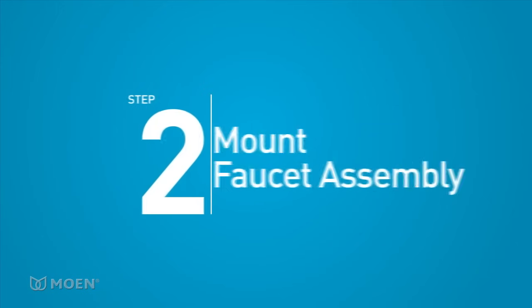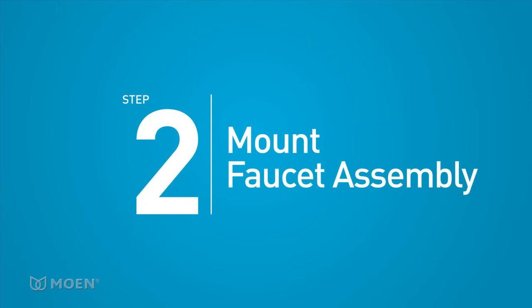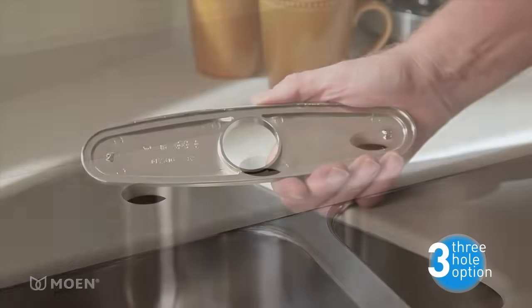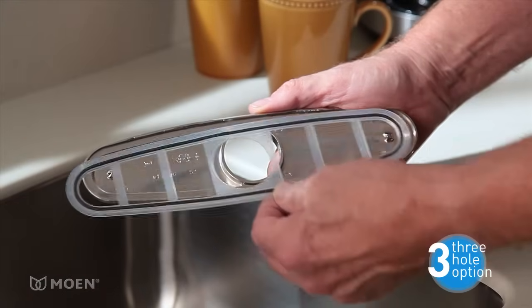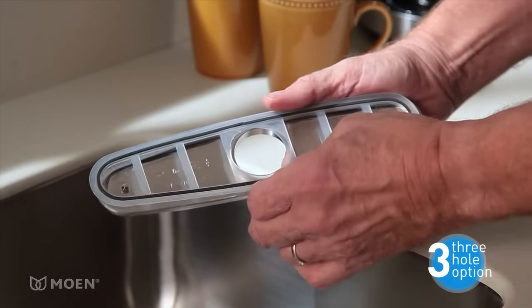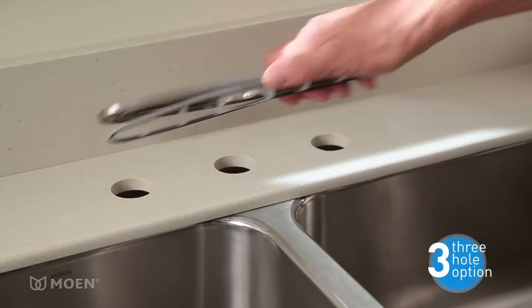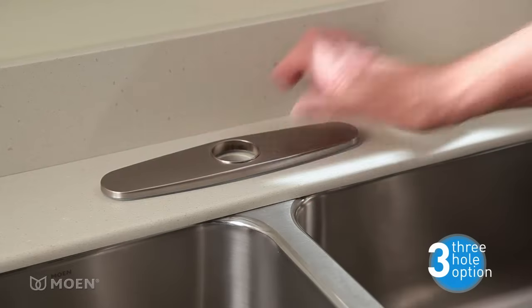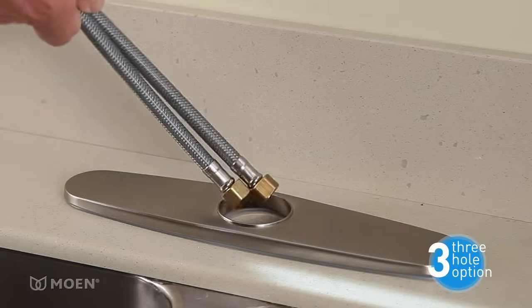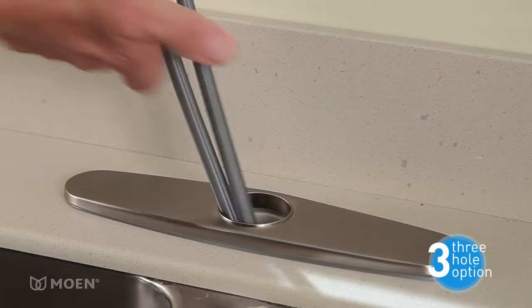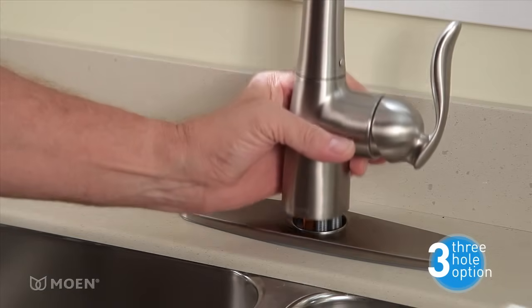Step 2. Mount the faucet assembly to your countertop or sink. If there are three holes in your countertop or sink, you'll need to install a deck plate. Check your product box to see if a deck plate is included with your faucet. Position the deck plate and its gasket over the center mounting hole to cover the holes you don't need. Then insert the hoses and faucet shank into the mounting hole.